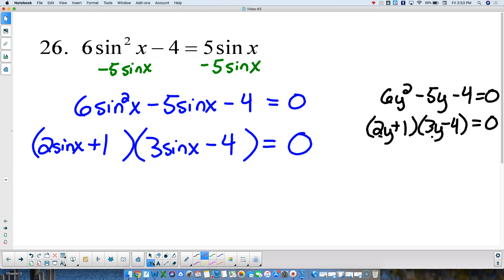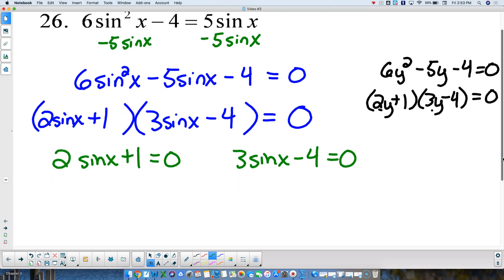Then, just like before, now we set our two parts. 2 sine of x plus 1 equal to 0, and 3 sine of x minus 4 equal to 0. And I solve those two. So then this would be 2 sine of x equals negative 1. So the sine of x equals negative 1 half.